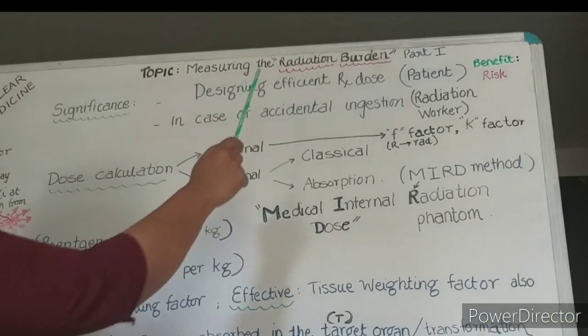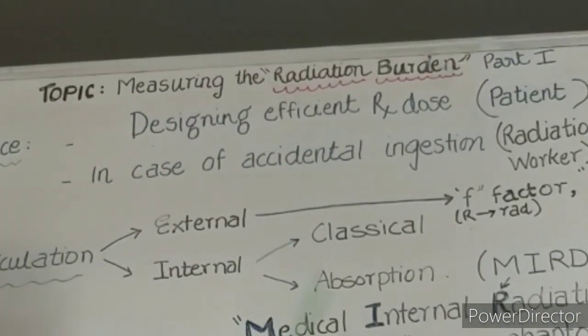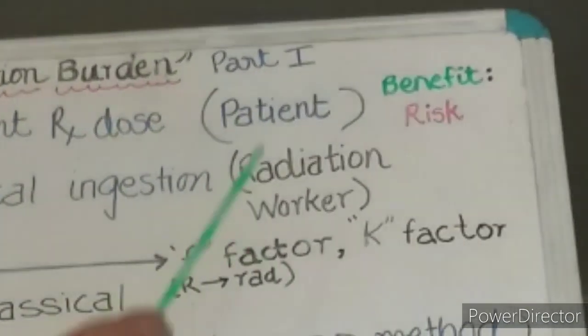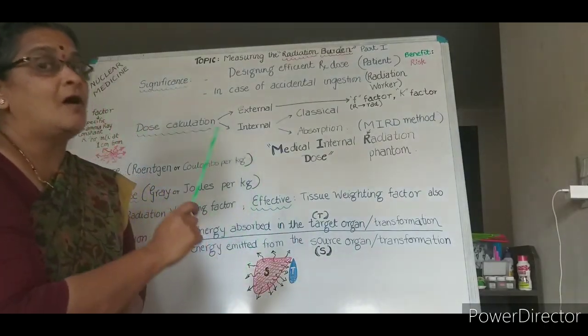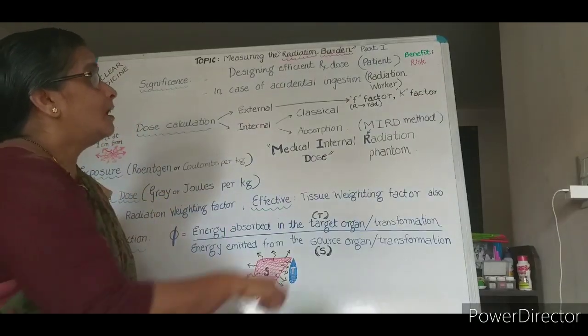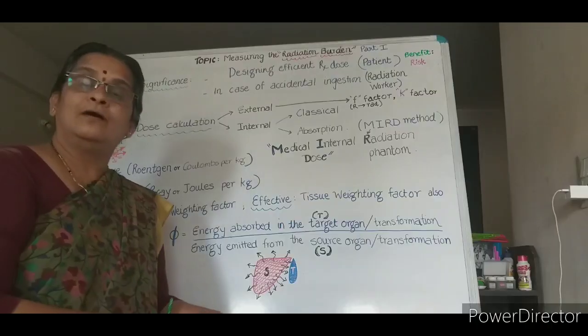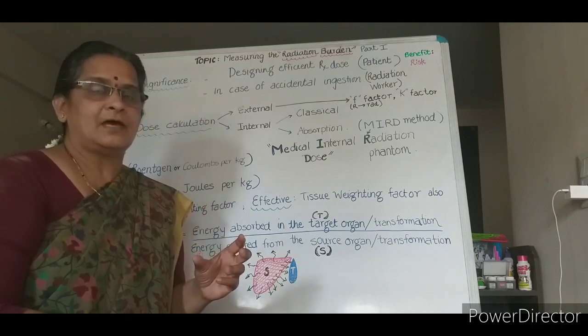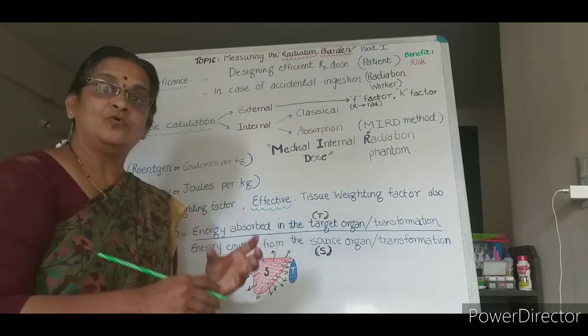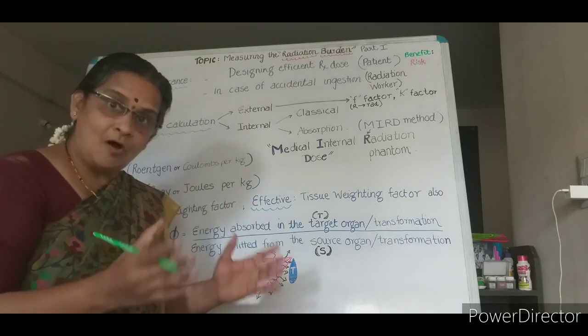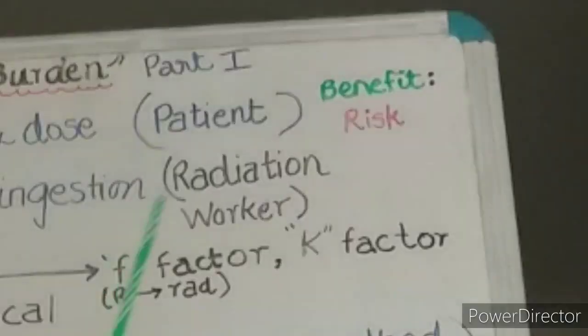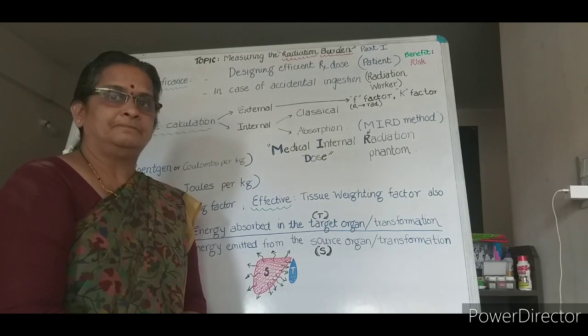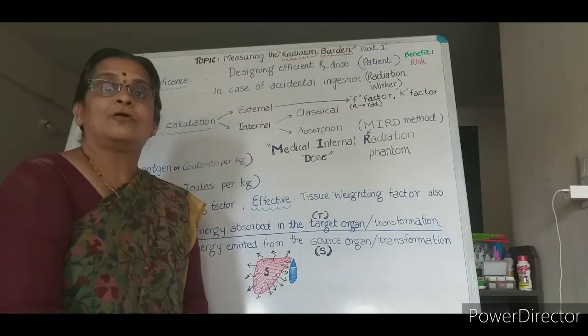Now let me talk about the significance of such a topic. When we are measuring the radiation burden or radiation dose for the patient, the therapy's dose efficiency can be determined by getting the maximum benefit possible. And how much is the calculated risk for the patient? As I told you earlier about biological targeting, where the abnormal tissue has to be targeted and maximum radioactivity should go there, and the normal tissue or surrounding tissue has to be safeguarded with negligible risk.